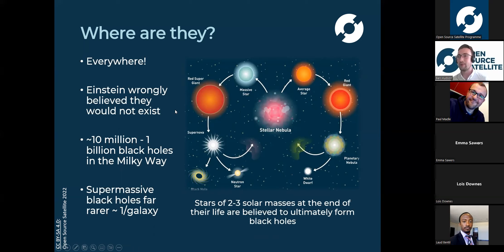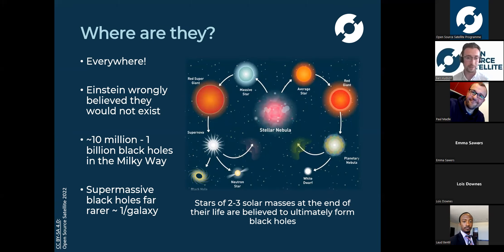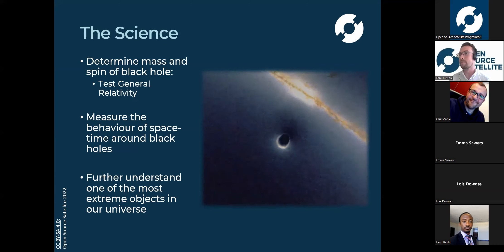Where are black holes? The answer now is essentially everywhere. Originally people thought they'd be incredibly rare, but it turns out they form as a pretty common part of a star's life cycle, likely when a star of around two to three solar masses reaches the end of its life and collapses. It's estimated there are between 10 million and a billion black holes in the Milky Way alone. Then there are supermassive black holes - as the name describes, absolutely huge - with a mass of between a million and 10 billion times more than our sun. Normally you only have one per galaxy, at the very center, and these are the ones we image from Earth since they are simply enormous.